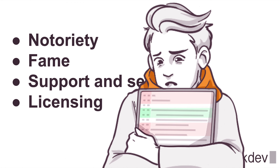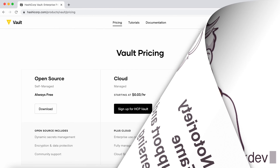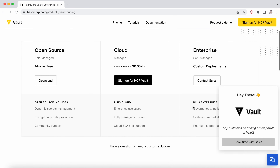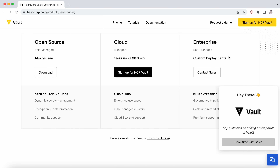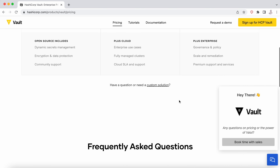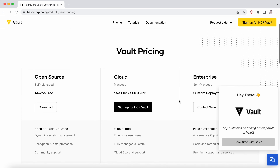The fourth point is licensing, and this is where another interesting part comes in. You can download many applications, but until you have paid the license, the application will not work for you — or maybe not completely. Another way to do that is like what HashiCorp is doing with the enterprise version: you can download the open source version, but support comes with the enterprise version.